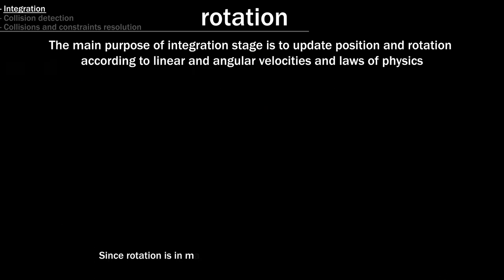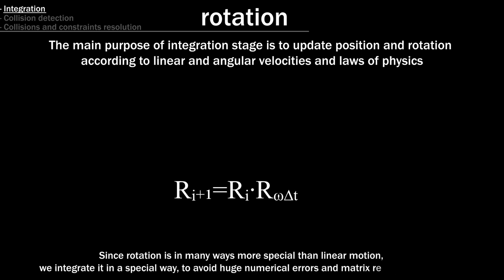Since rotation is in many ways more special than linear motion, we integrate it in a special way to avoid huge numerical errors and matrix re-normalization. Where our omega is omega times delta t, converted to a rotational matrix form.